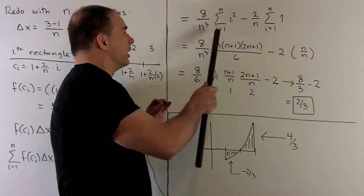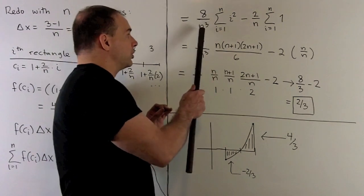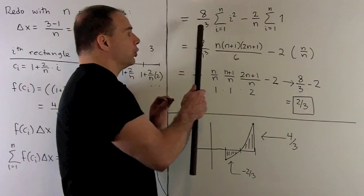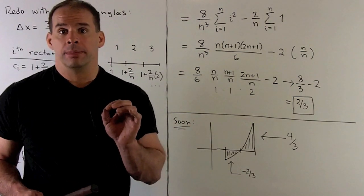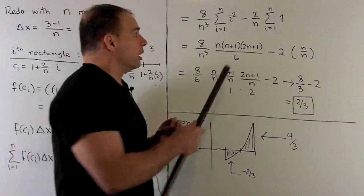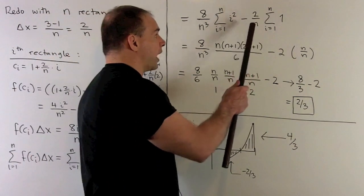So, for here, I can factor out 8 over n cubed. Note, n cubed is not a variable. There's no i in it. n is just going to be some fixed number. Then, in our second part, I can factor out 2 over n.